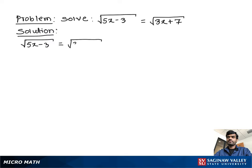Now to remove the radical sign square root, we square both sides, which helps us remove the radical sign square root. So we write: square root of (5x minus 3), all squared, equals square root of (3x plus 7), all squared. This square helps to remove the radical sign square root.